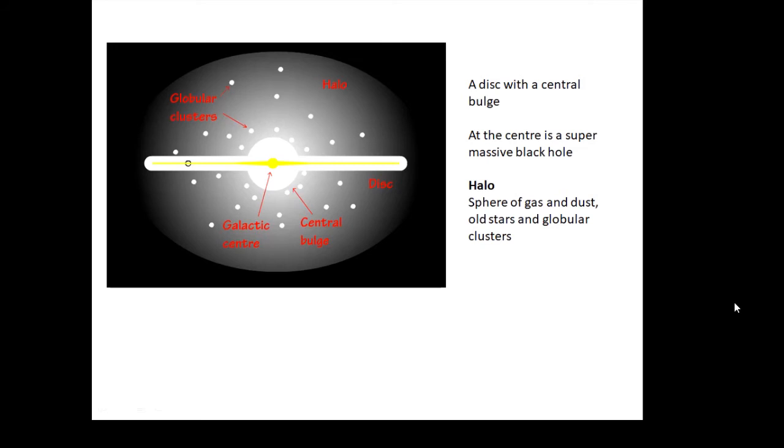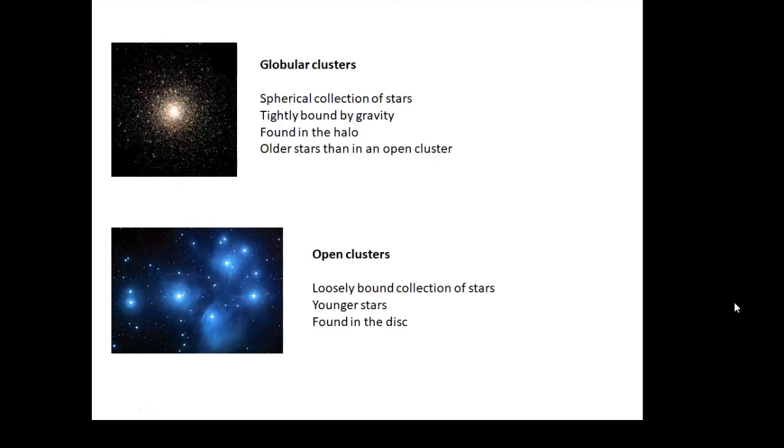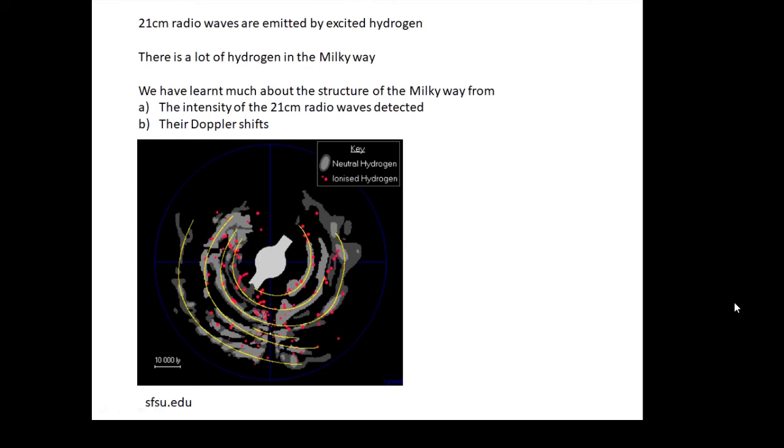Two types of clusters: globular clusters and open clusters. Globular clusters are spherical collections of stars tightly bound by gravity, found in the halo—they are old stars. Open clusters are loosely bound collections of younger stars found in the disk. You may recognize this open cluster—it is the Pleiades.